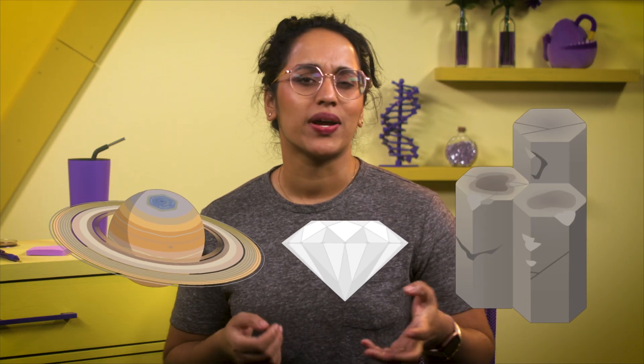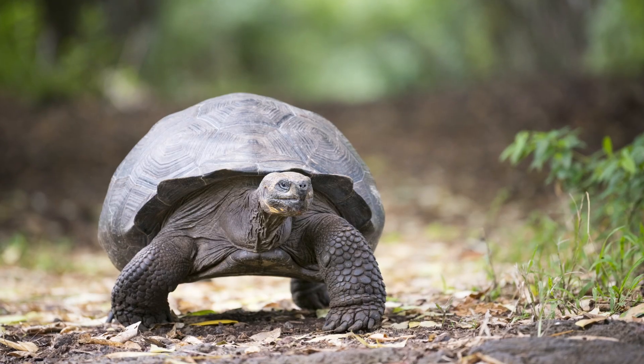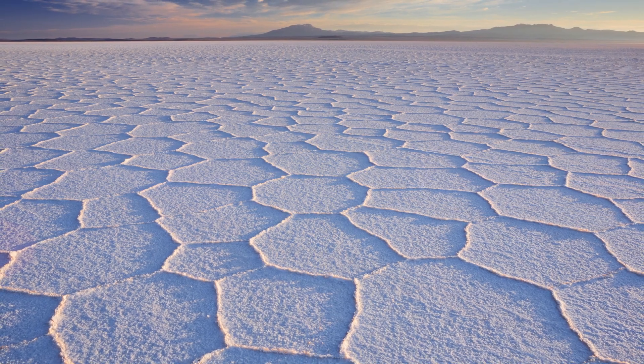What do Saturn, a diamond, and Giant's Causeway in Ireland all have in common? Hexagons! From honeycombs to the shells of tortoises, hexagons appear all over the natural world. Even when you push bubbles together, they'll make hexagons.